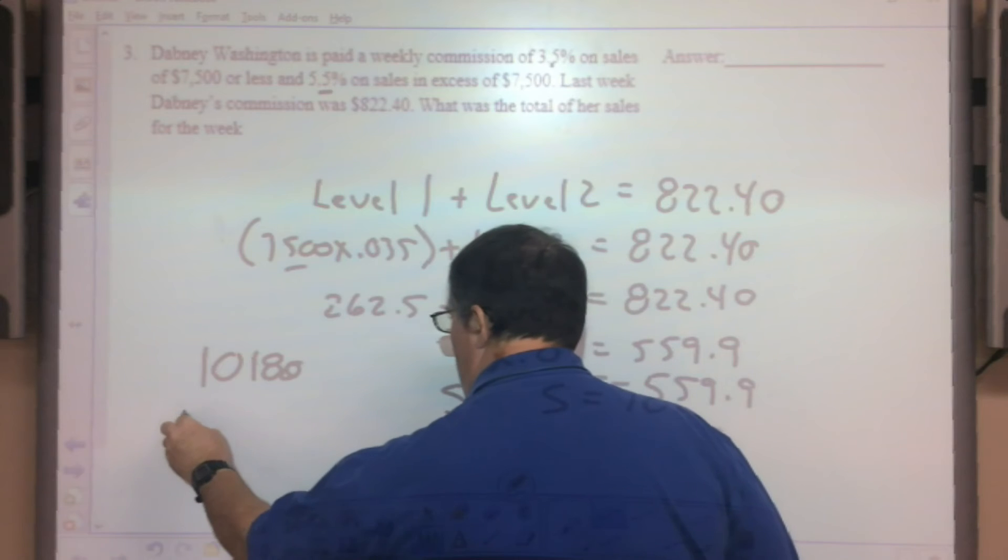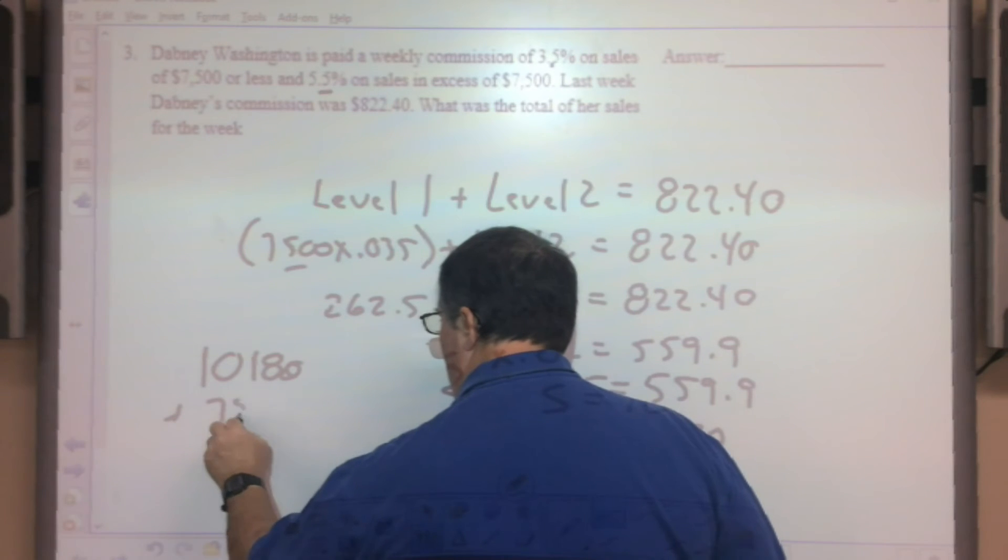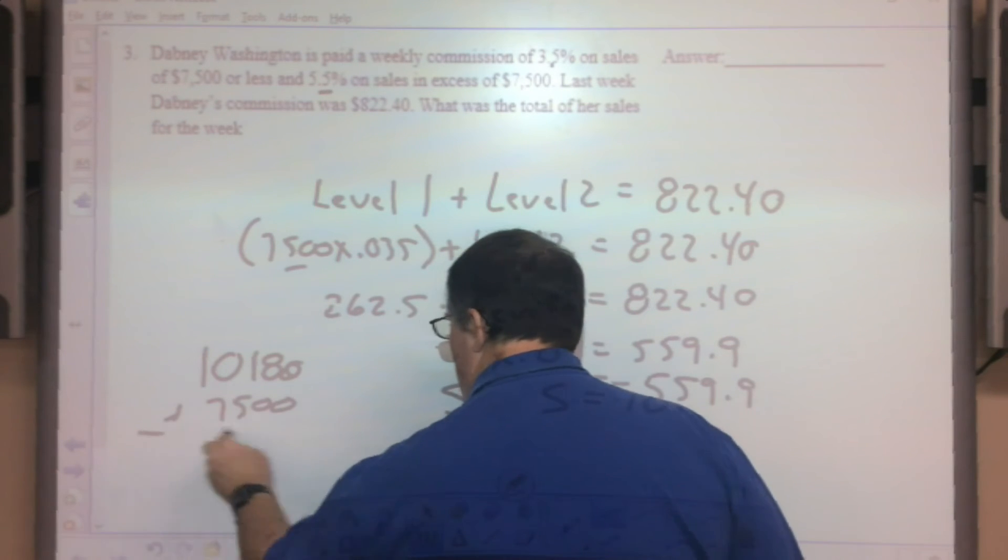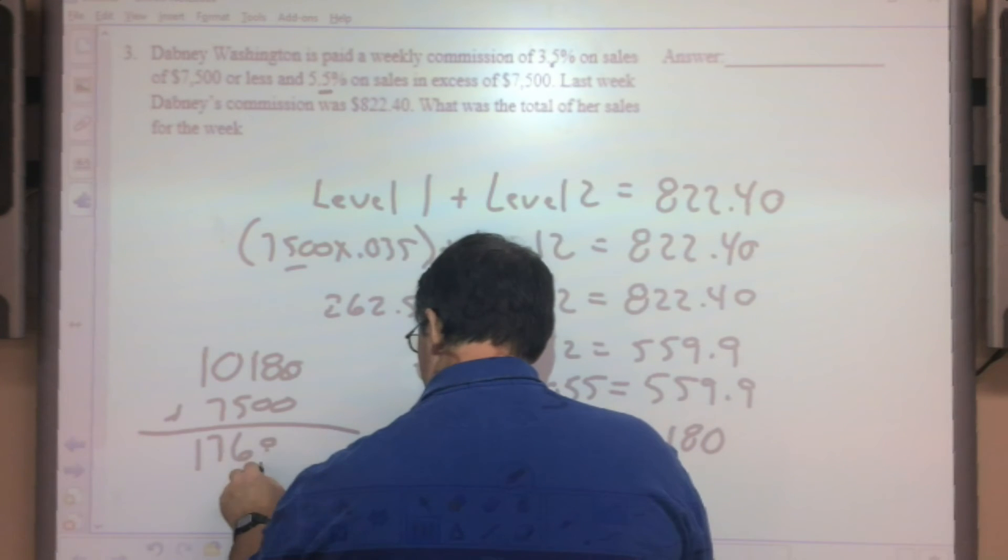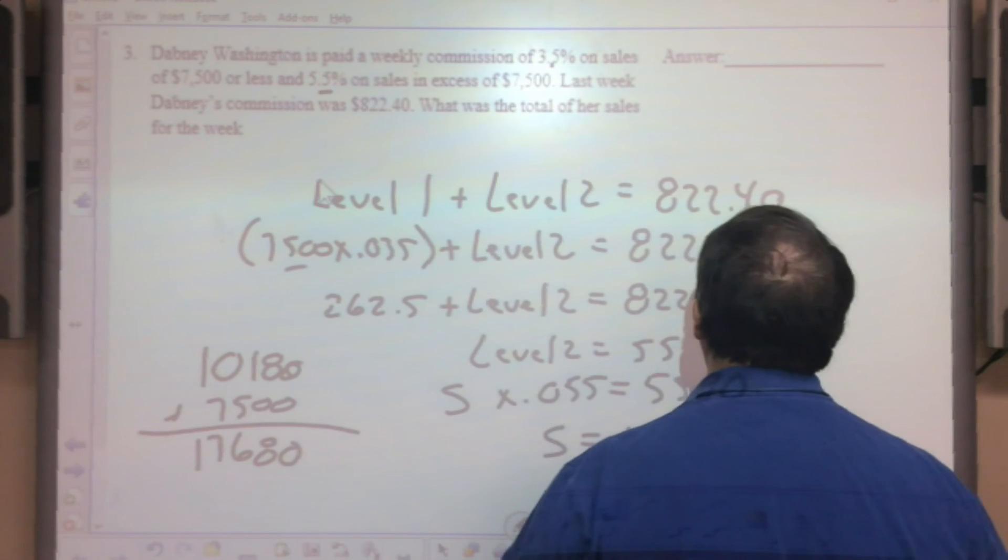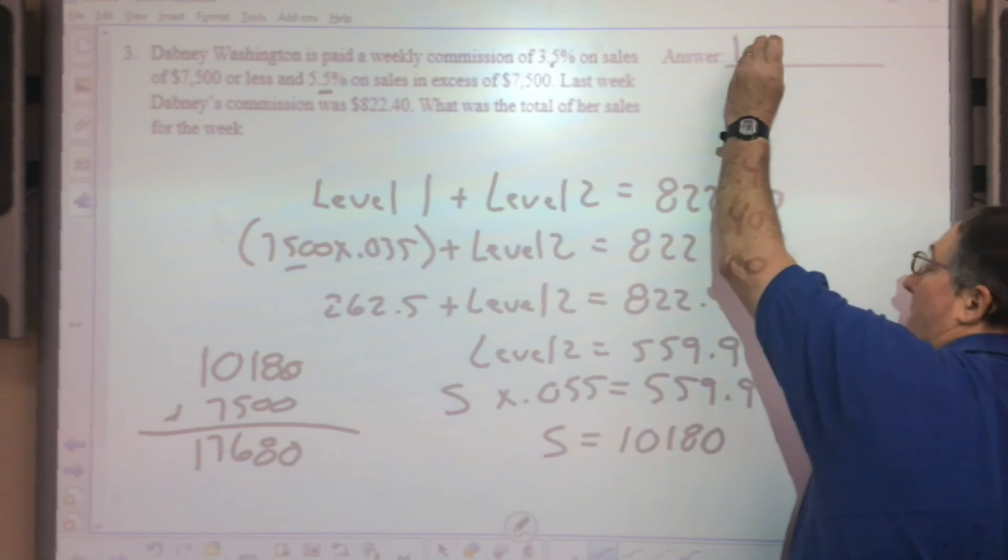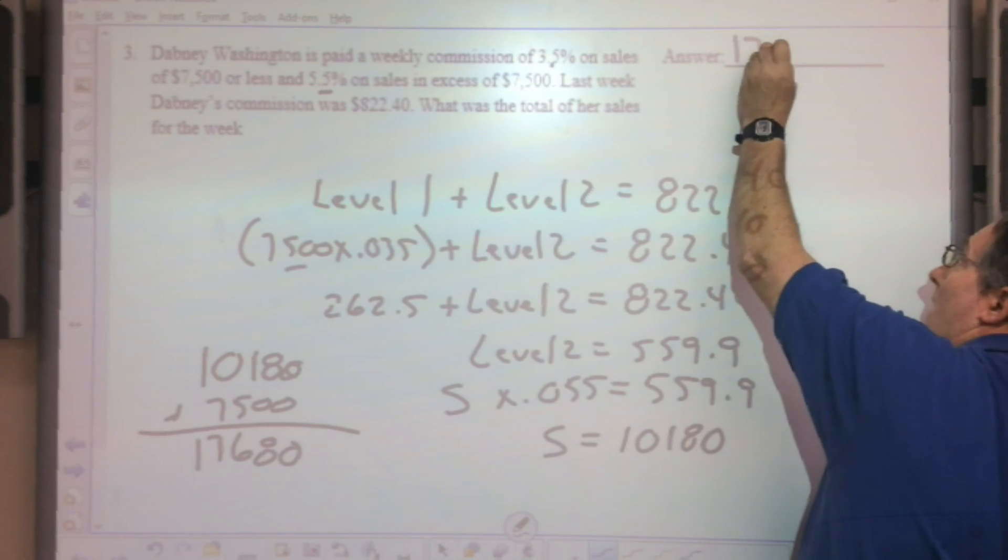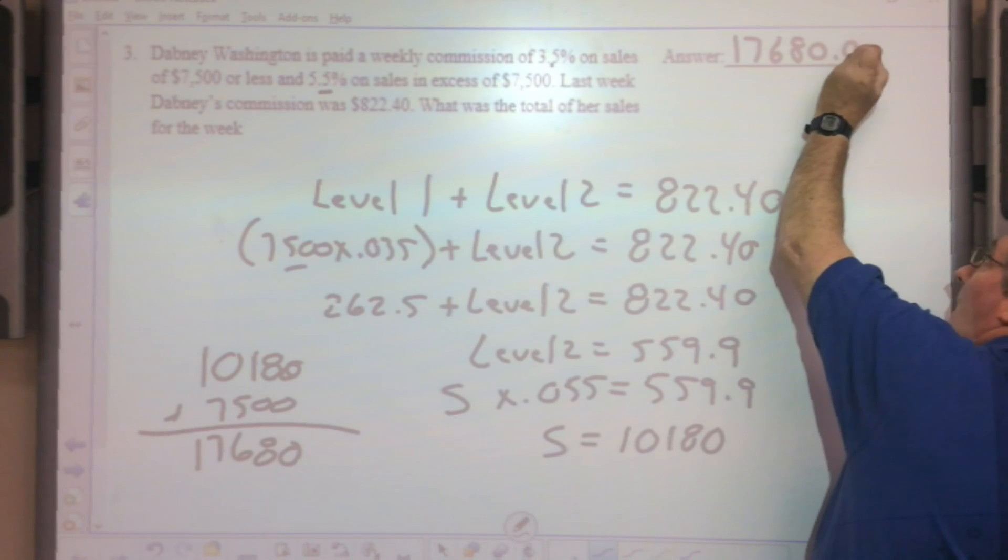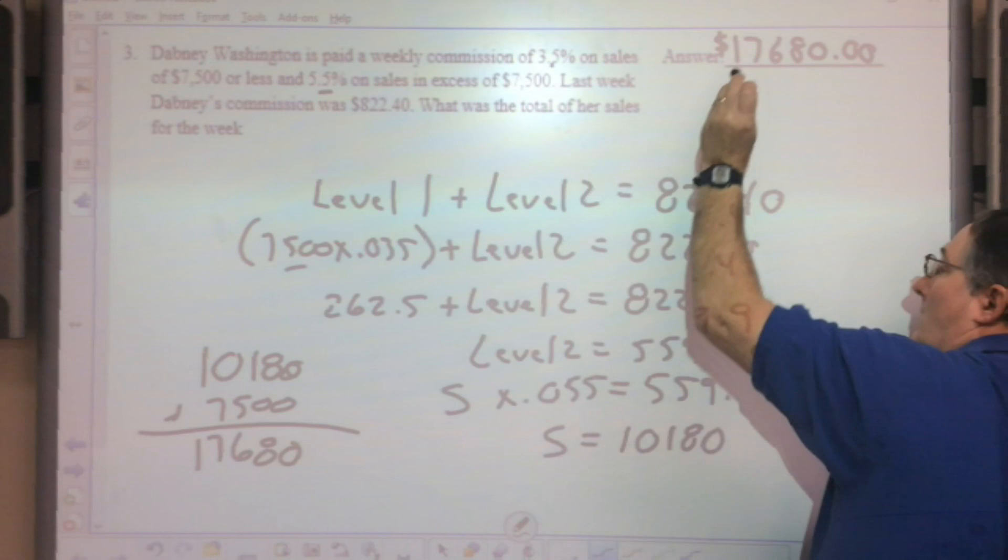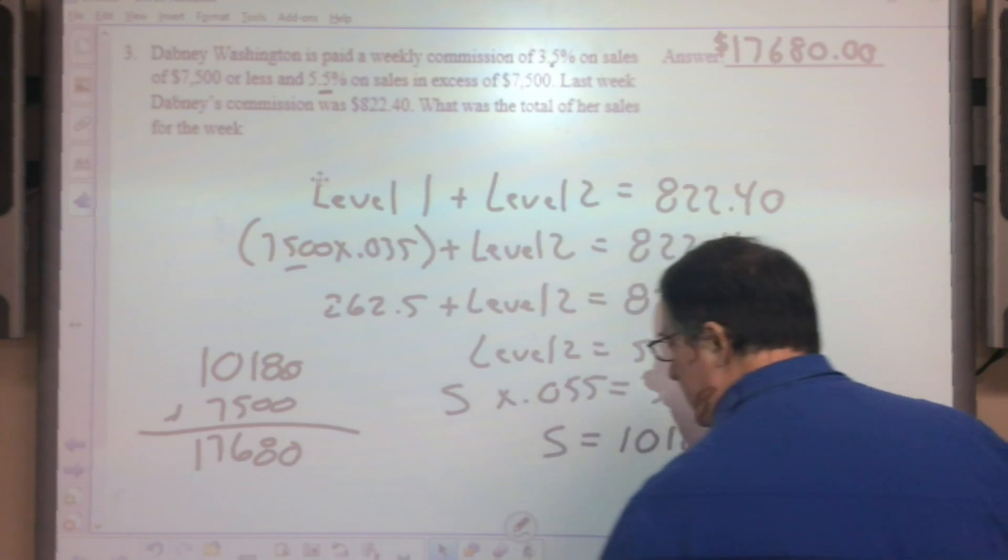There we go, $10,180, that's in the second level. So you have to add the first level, which would be $7,500, together to figure out what the total sales are. $17,680 worth of sales, broken down into the two levels, and you get the proper commission.